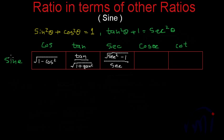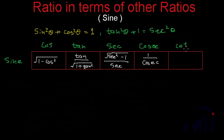Next, we write sinθ in terms of cosecθ. Since sinθ is the inverse of cosecθ, sinθ = 1/cosecθ. This is direct. And next we need to write it in terms of cotθ.